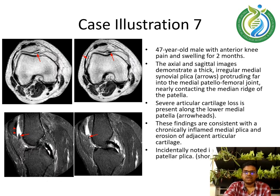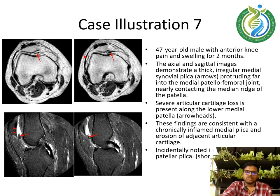Case illustration 7: a 47-year-old male with anterior knee pain and swelling for 2 months. Axial and sagittal images demonstrate a thick irregular medial synovial plicae protruding far into the medial patellofemoral joint, nearly contacting the medial ridge of the patella, shown by the arrows. Severe articular cartilage loss is present along the lower medial patella, consistent with a chronically inflamed medial plicae and erosion of adjacent articular cartilage. Incidentally noted is a normal lateral patella plicae shown by the short arrow.